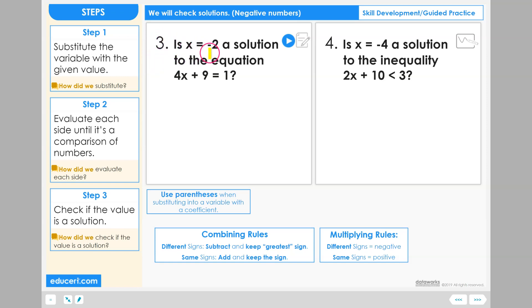Is x equals negative 2 a solution to the equation 4 times x plus 9 equals 1? Step 1: Substitute the variable with the given value. The value that they gave us for x is negative 2, so we will take the equation and replace the variable with negative 2. Use parentheses when substituting into a variable with the coefficient. That way we know that we are going to multiply 4 times this negative 2.